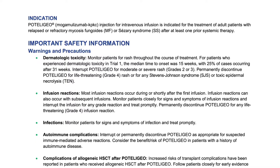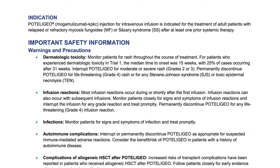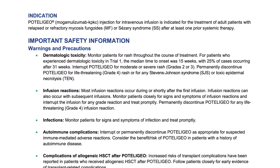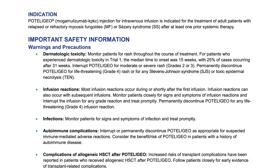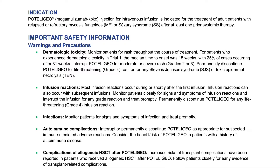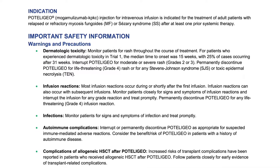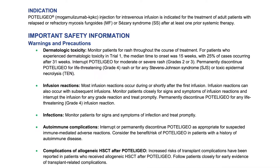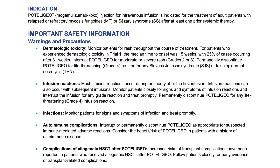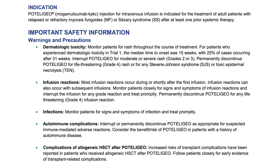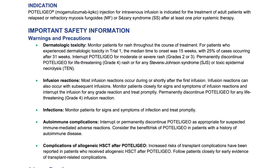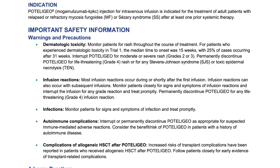Important safety information, warnings and precautions. Dermatologic toxicity: Monitor patients for rash throughout the course of treatment. For patients who experienced dermatologic toxicity in Trial 1, the median time to onset was 15 weeks with 25% of cases occurring after 31 weeks. Interrupt mogamulizumab for moderate or severe rash, grades 2 or 3.